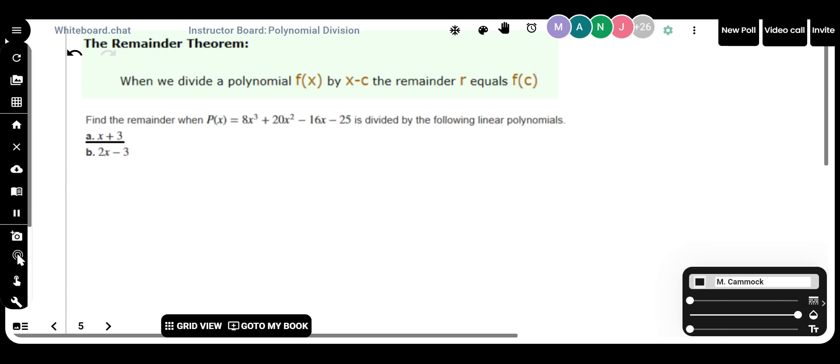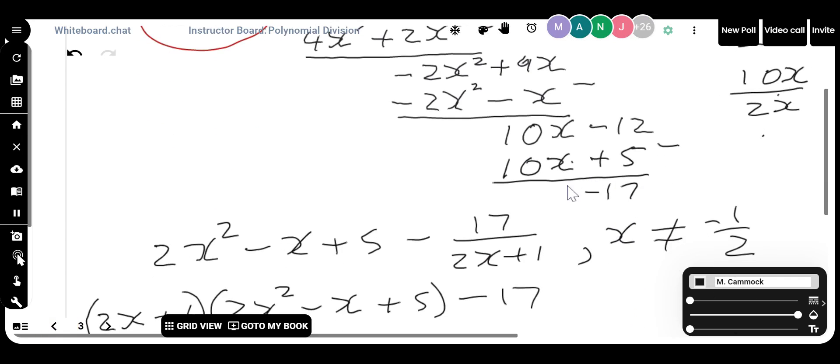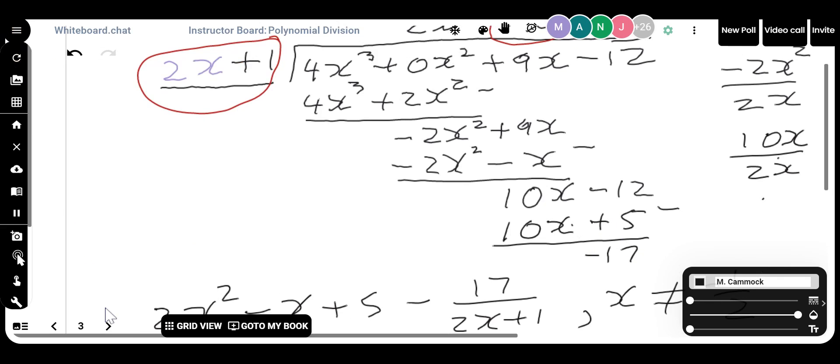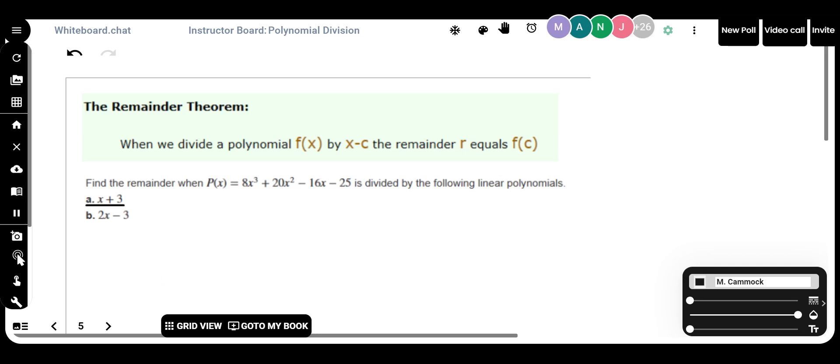Let me get to the remainder theorem now. Remainder theorem says, if all I'm interested in is the remainder and I'm not really interested in the quotient, when we do the division at the end of it we have something called a remainder. So this minus 17 that I'm pointing to, that's my remainder. Well, what if that's all I really was interested in? If that is the case, remainder theorem says if I divide a polynomial by x minus c, then the remainder is equal to the f of c.